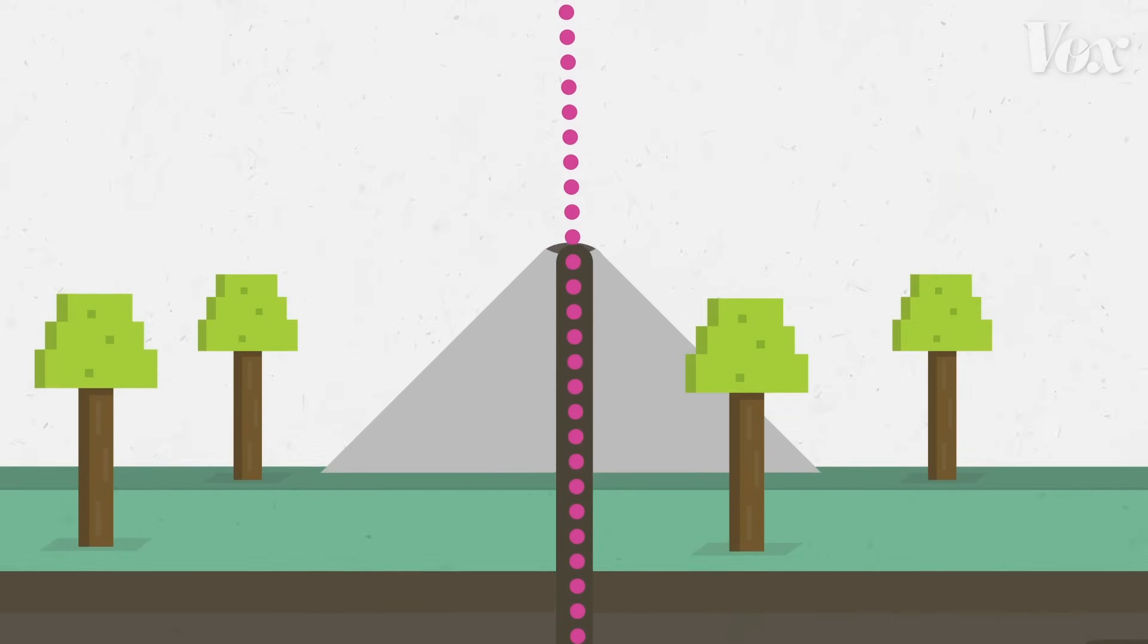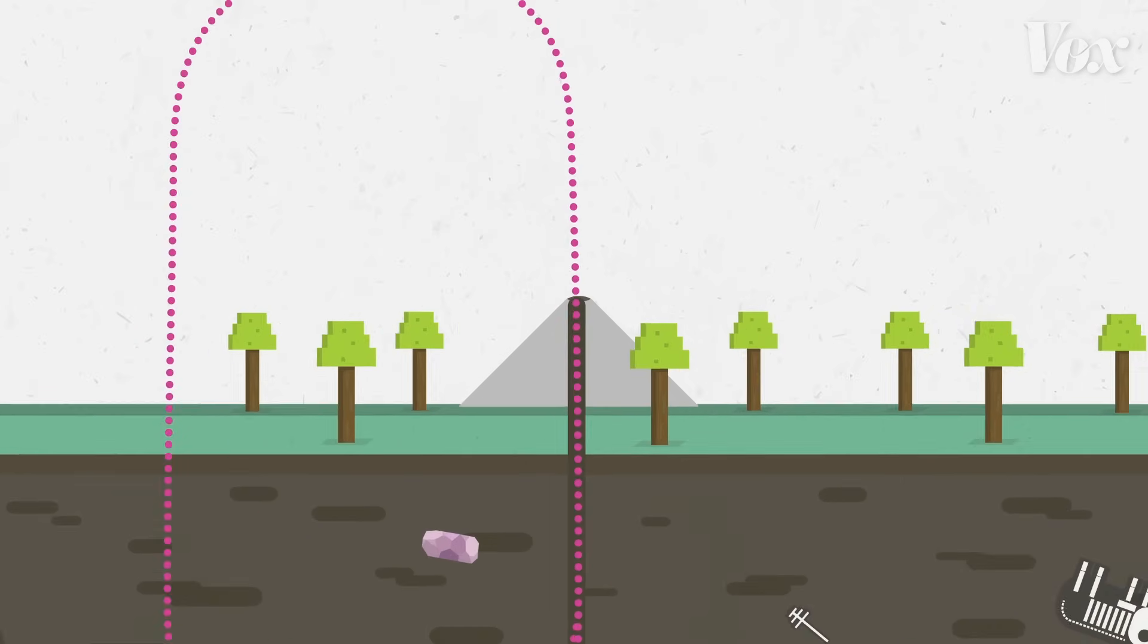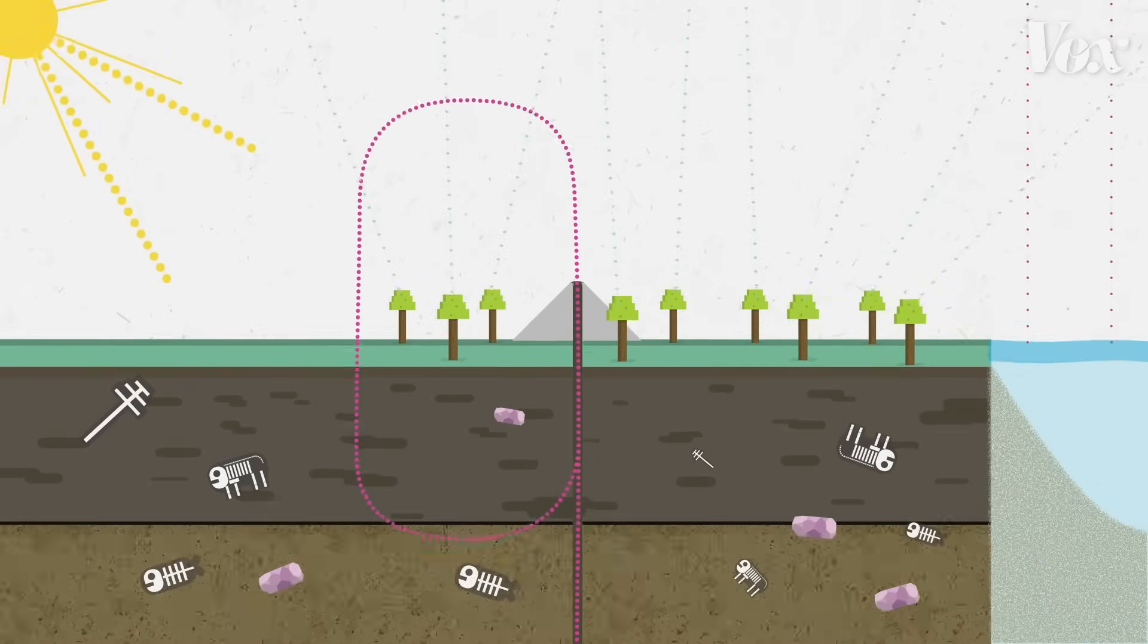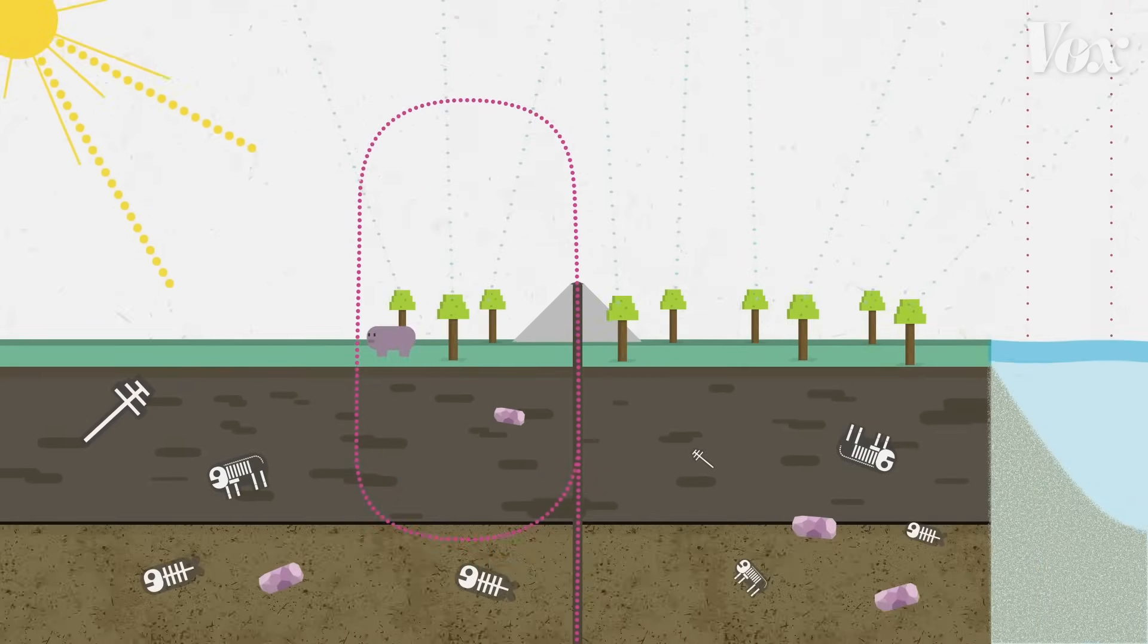Over time, that trapped carbon eventually escapes into the atmosphere when volcanoes erupt, and the cycle starts again.